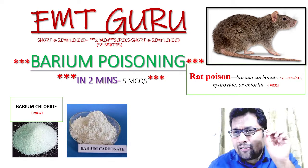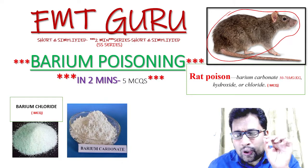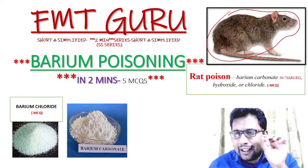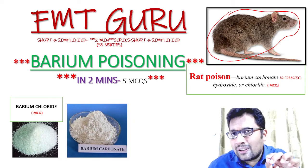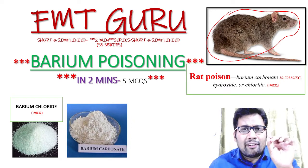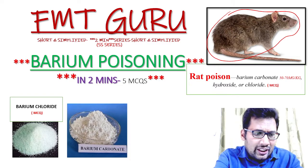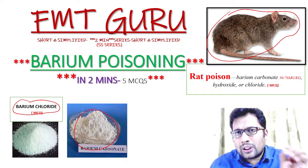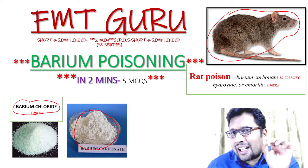Barium is a well-known rat poison. The 3 compounds commonly used are barium chloride, barium carbonate, and barium hydroxide. The fatal dosage of barium carbonate is 70 mg per kg body weight. You can see here barium chloride and barium carbonate — both are usually white color compounds, used as rat poisons.